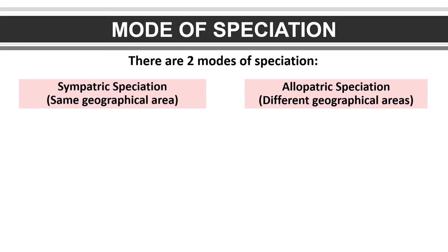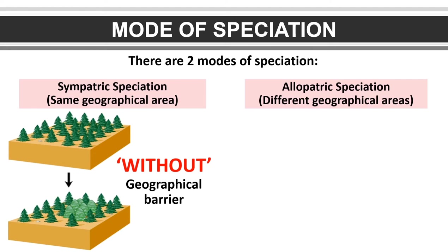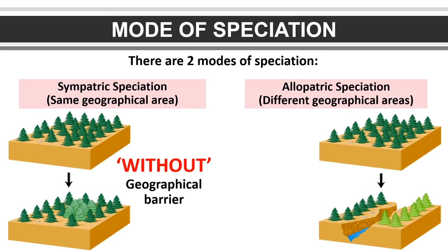Students, do you know how many modes of speciation are involved? There are two modes of speciation. First, known as sympatric speciation, and second, namely allopatric speciation. In sympatric speciation, the two populations are located within the same geographical area, without a geographical barrier. Whereas in allopatric speciation, the two populations are located within the same geographical area but with a geographical barrier, such as a river.